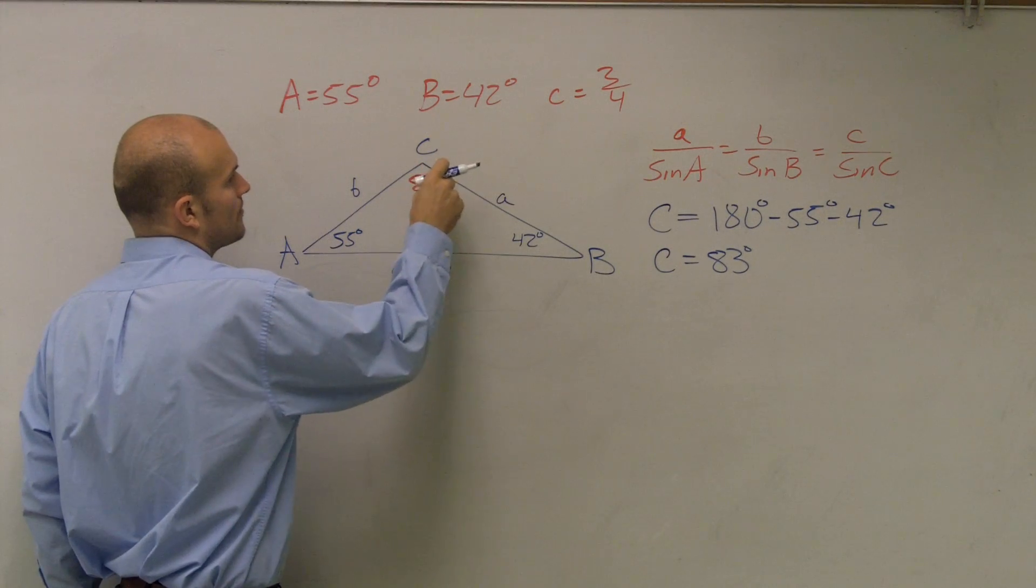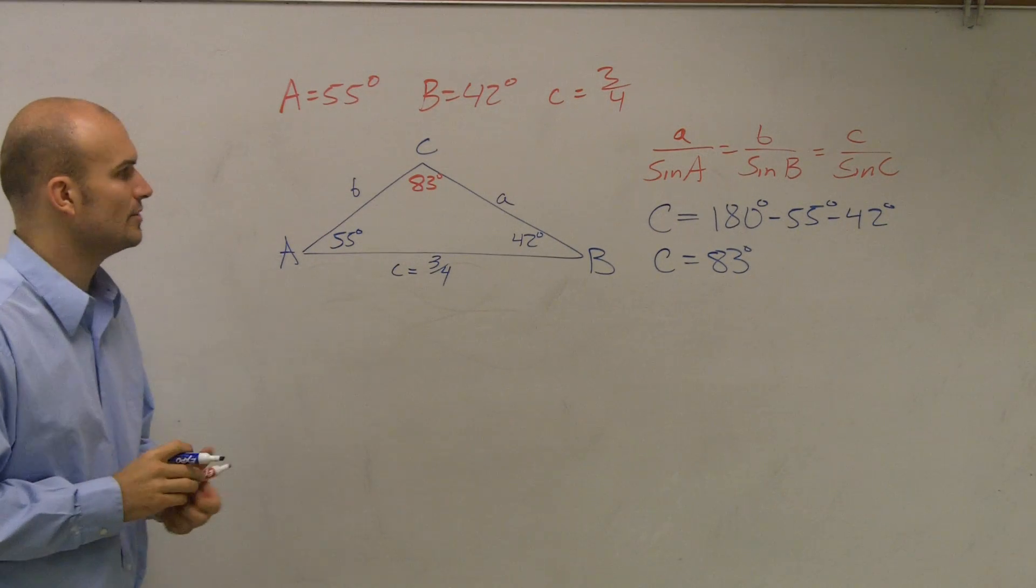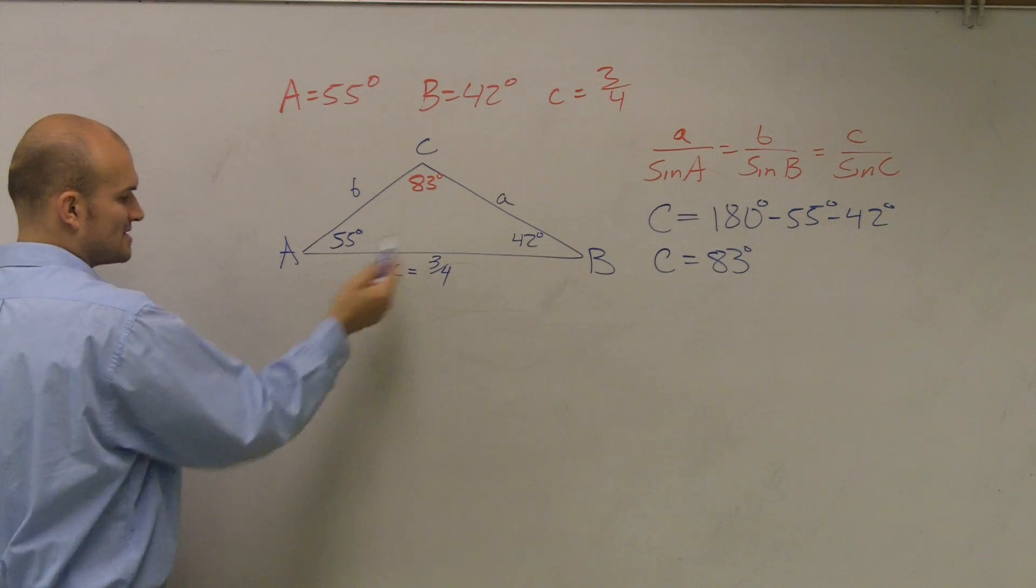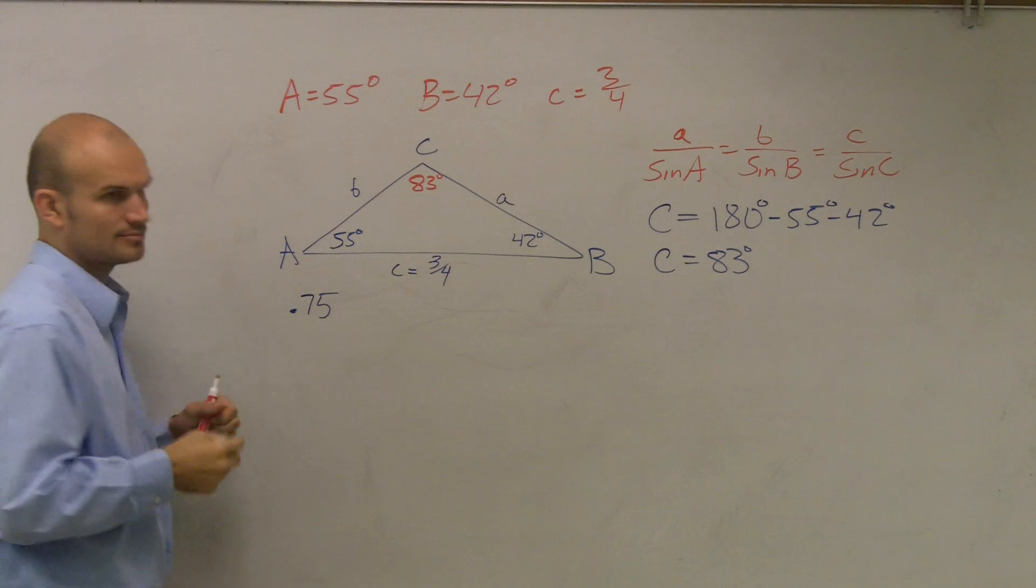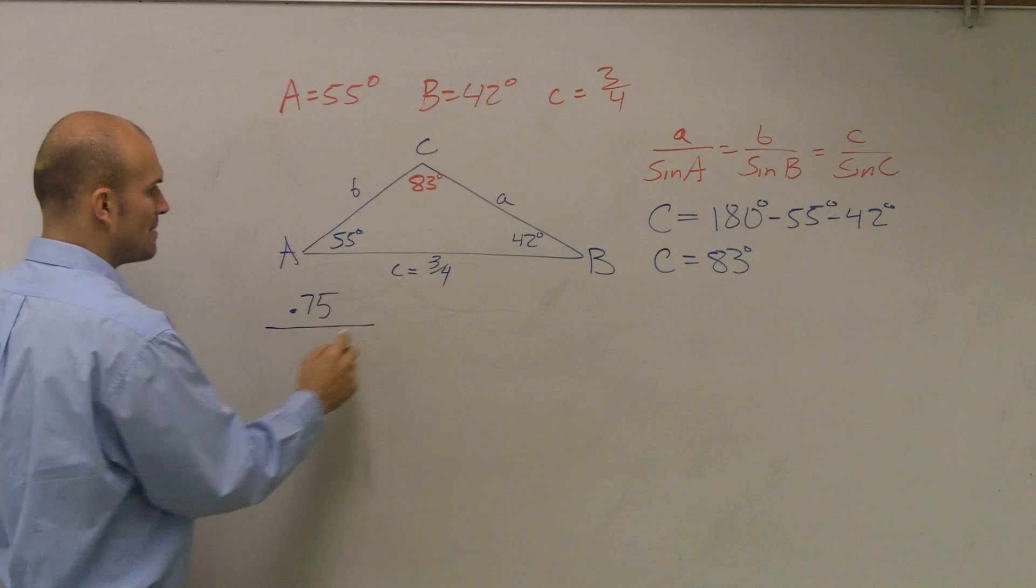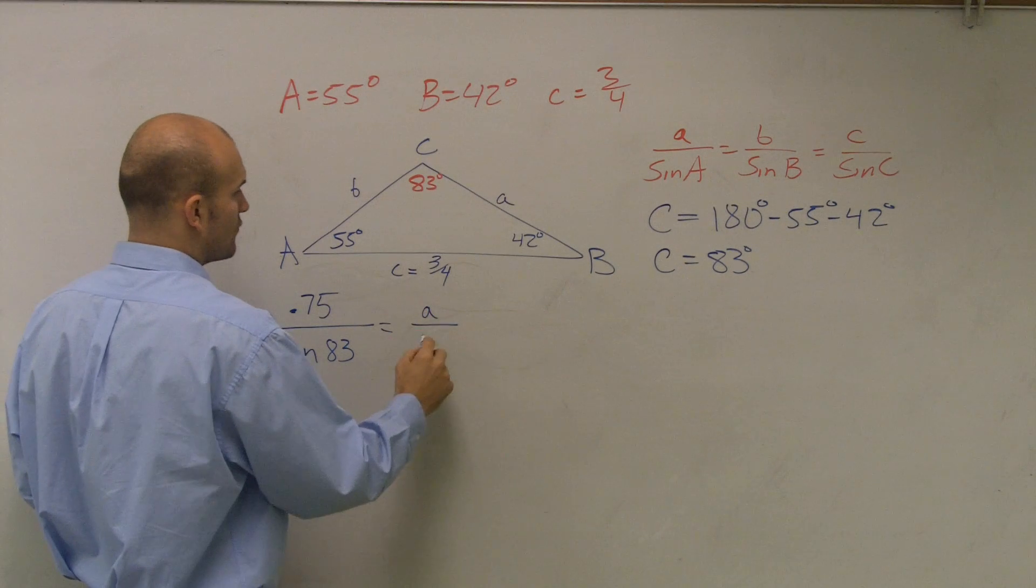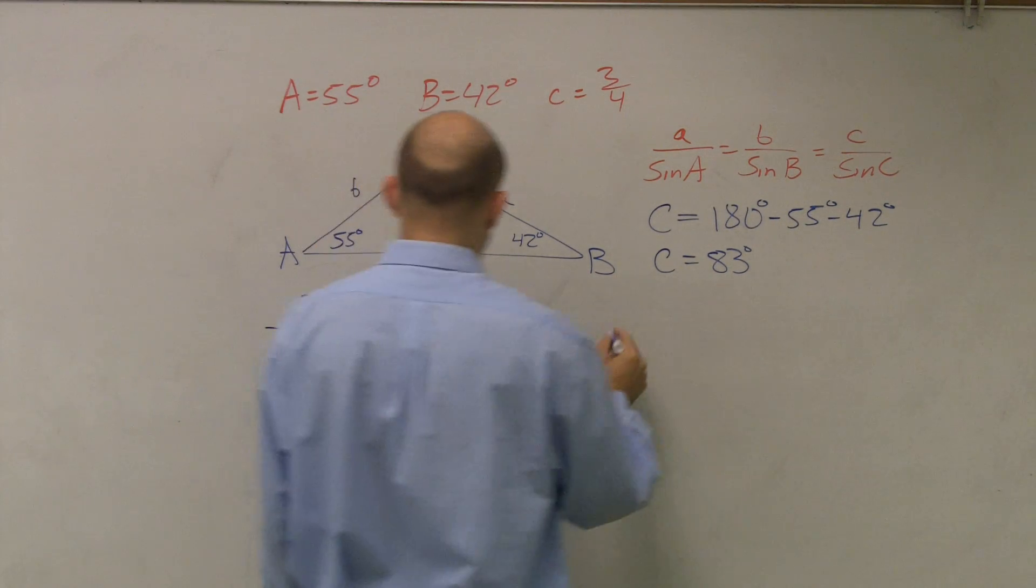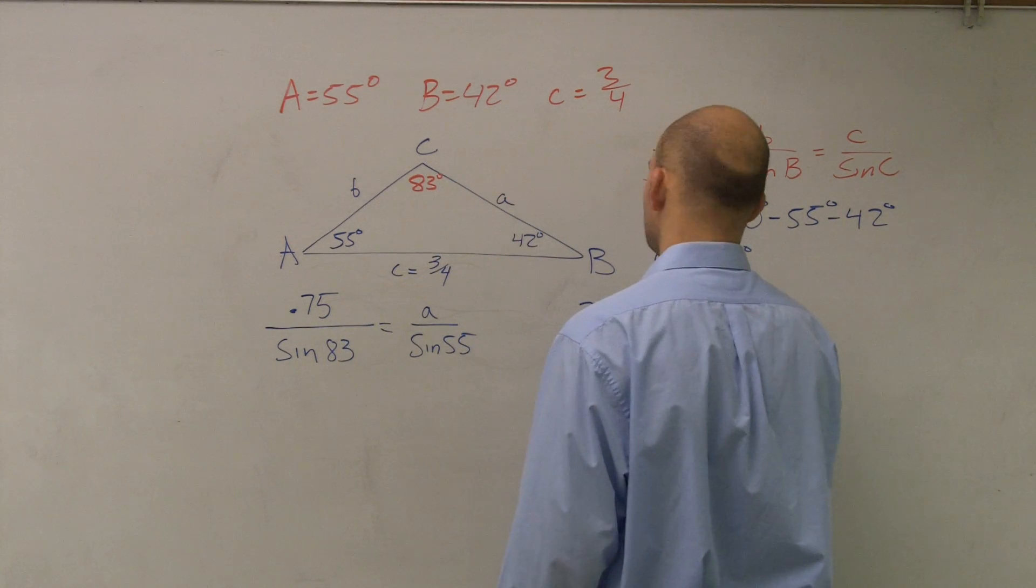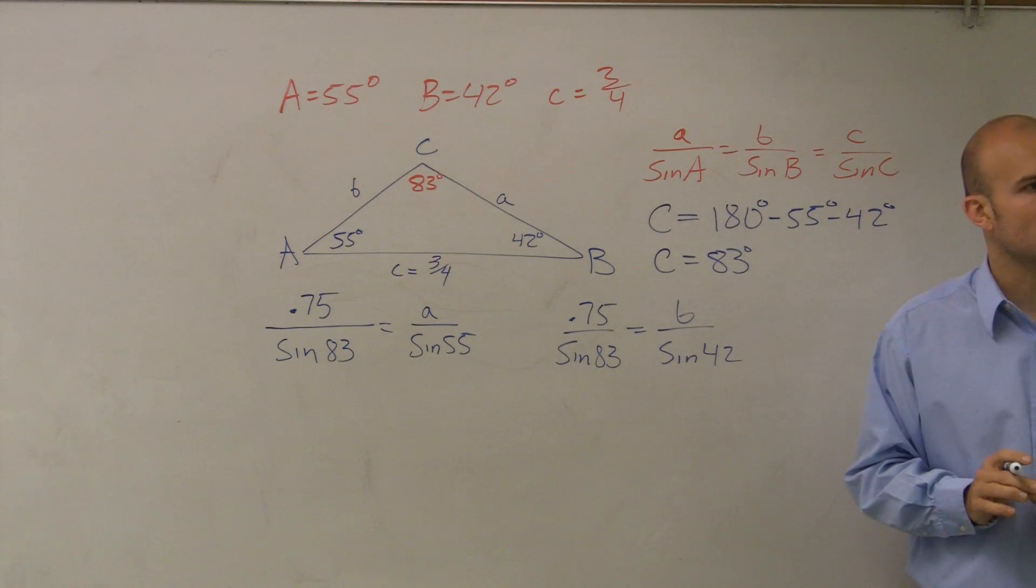So now I can apply the law of sines. I'm actually going to do it twice. So since I have these two and I have both of these angles, I'm just going to set it up. Instead of three-fourths, I'm just going to convert it to a decimal. So I'll just use 0.75 because I'm going to be primarily using my calculator. 0.75 over sine of 83 equals A over sine of 55. And let's do that again. 0.75 over sine of 83 equals B over sine of 42. So I'm going to do both these problems, one for finding A, one for finding B.